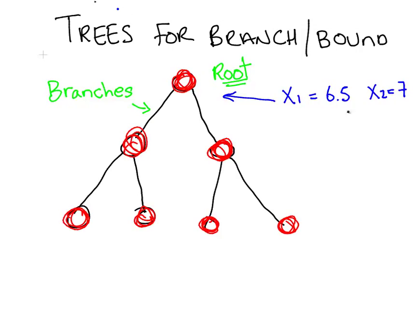Because we're looking for integer answers, we would have to branch. So we might branch on one of the variables, that is to say impose an additional restriction. Here it would be x1 less than or equal to 6, and on this side it would be x1 greater than or equal to 7. That's what these branches would represent. You would reformulate the problem with these new nodes and keep going on until you get an answer.